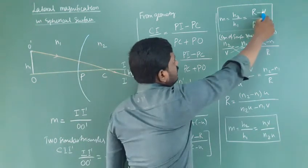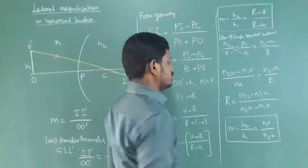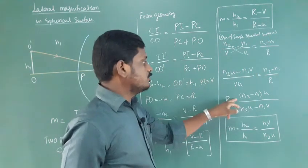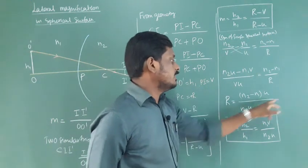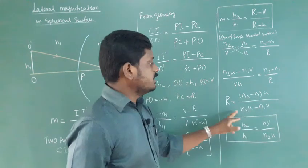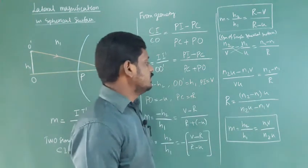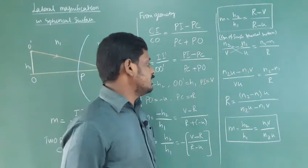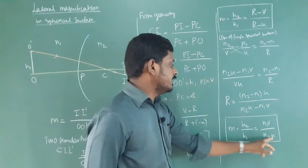For R minus V by R minus U, R minus U is minus U. Calculate R minus V, minus V. If you substitute, you will get N₁ by N₂ U.